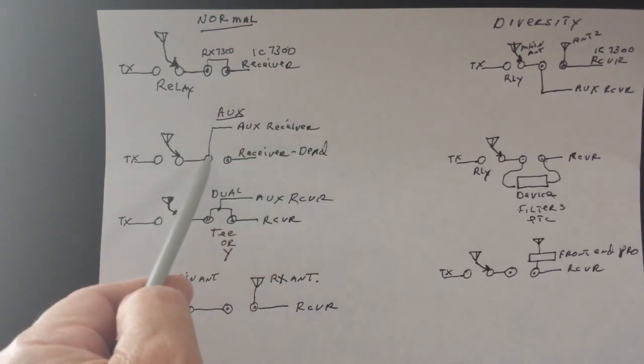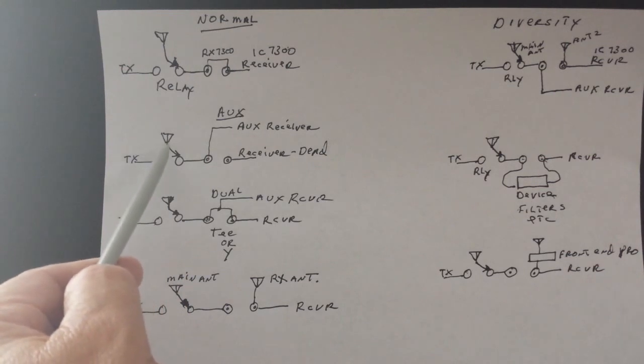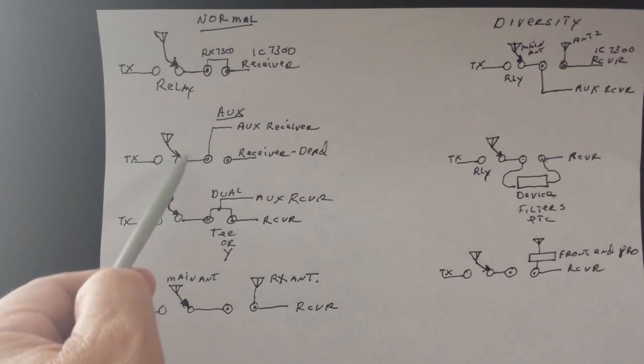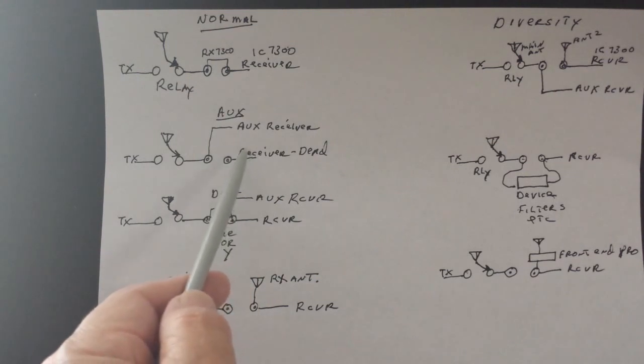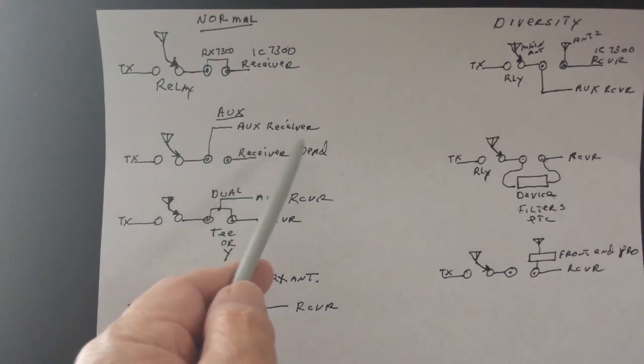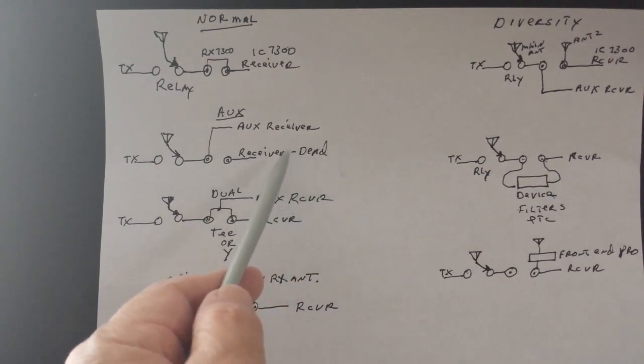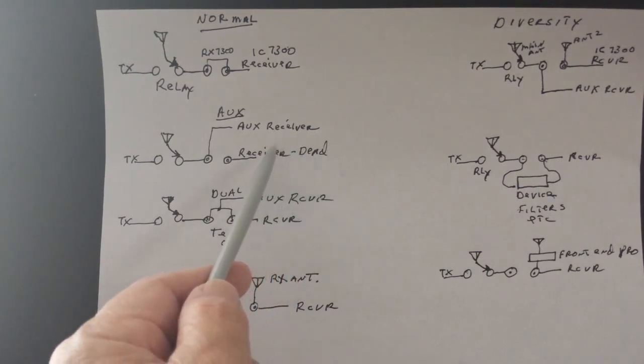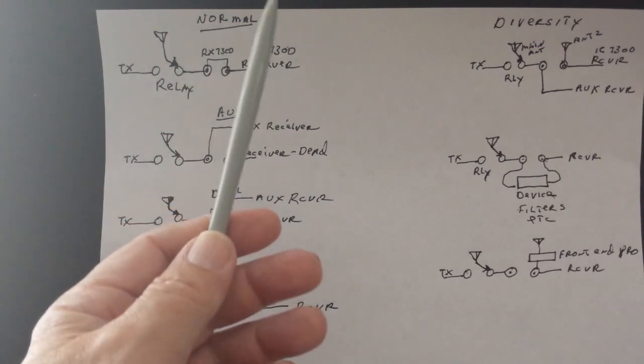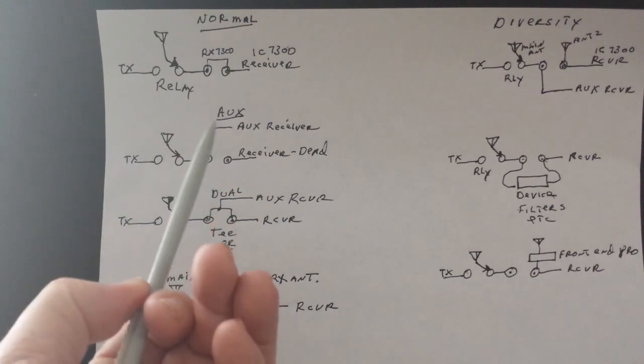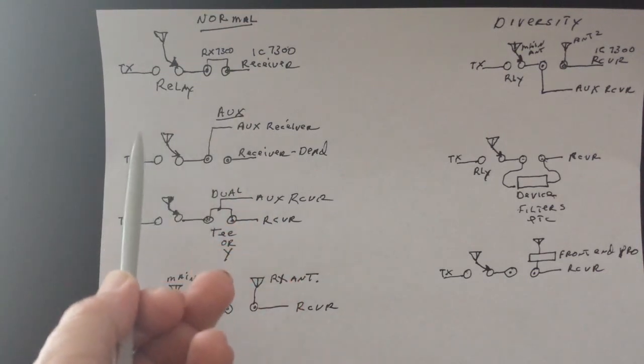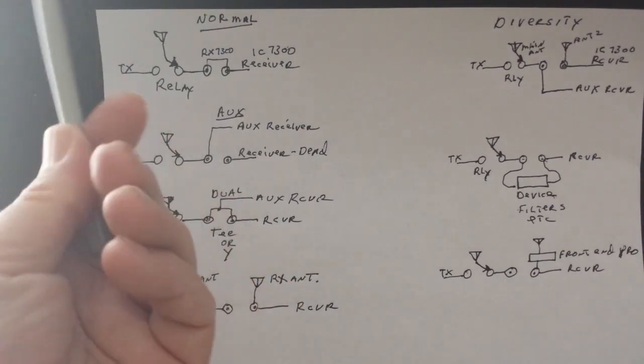And that way, when the antenna is in the normal position and you're receiving, the relay would pass the signal to the auxiliary receiver, and the receiver in the 7300 would be inactive. There would be no signal getting to it. So that would be like if you wanted to use a separate receiver stand-alone and then use your transmitter in the 7300, sort of like the old-fashioned way of doing things.